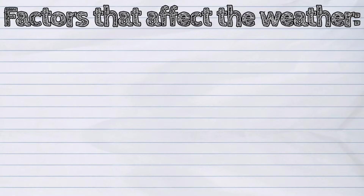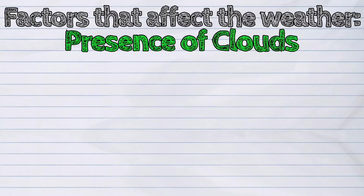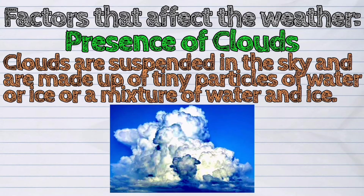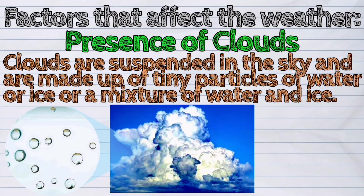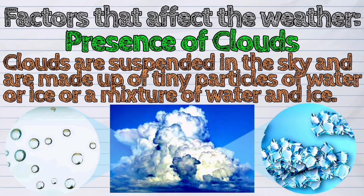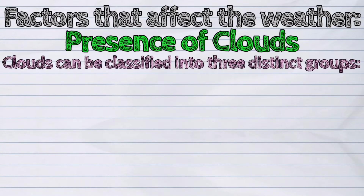Another factor that affects weather is the presence of clouds. Clouds are suspended in the sky and are made up of tiny particles of water or ice, or a mixture of water and ice. Clouds can be classified into three distinct groups.